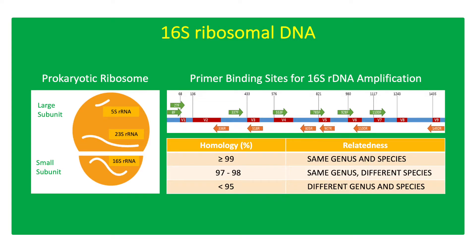Bacterial 16S rDNA sequencing is a molecular method used to determine the genus and species of an unknown bacterial isolate. 16S rDNA is the gene encoding for prokaryotic 16S ribosomal RNA, about 1,500 base pairs. It is found in the genomes of all prokaryotes and is made up of multiple conserved and variable regions.